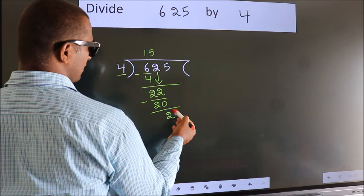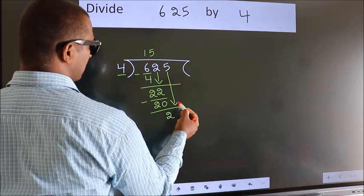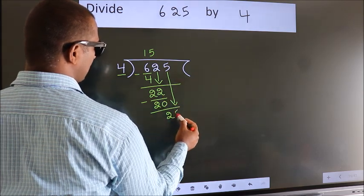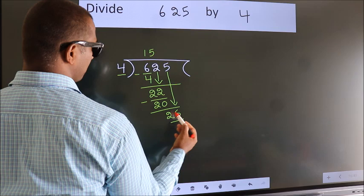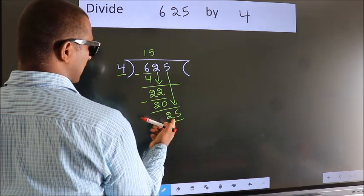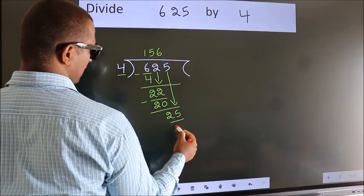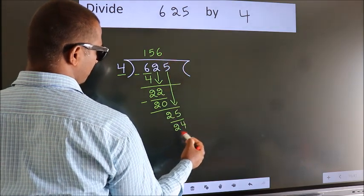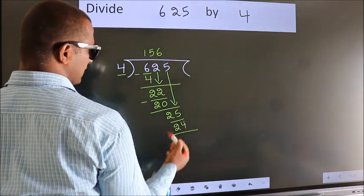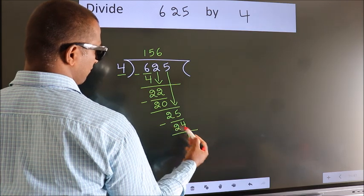After this, bring down the beside number. So 5 down, so 25. A number close to 25 in the 4 table is 4 sixes 24. Now we subtract. We get 1.